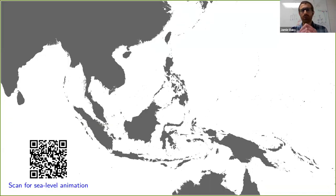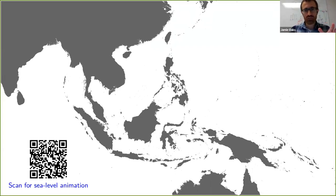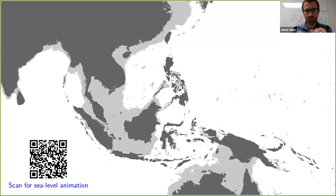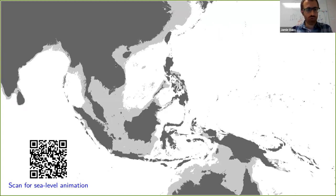All of this work was really motivated by a question about the biogeography of Southeast Asia. This is what Southeast Asia looks like today, but during glacial periods sea levels were much lower, with much more land exposed across the Sunda Shelf and other areas. If you want to see an animation of the last 400,000 years of Southeast Asian sea level change, you can scan the QR code. This fragmentation was happening repeatedly — every time there was a glacial period, Southeast Asia looked something more like this.